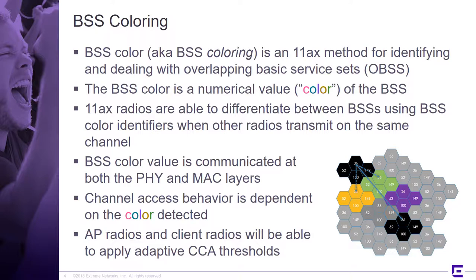Instead of talking about these numerical values we like to talk in terms of color, so those numerical values are called colors — it's a nickname. You can see in the graphic here we've got channel plans: black, green, yellow, gray, purple, and so on. The idea of BSS coloring is that channel 36 black and 36 green would not interfere with each other, and 36 black and 36 yellow would not interfere, and so on — only 36 black and 36 black would interfere.